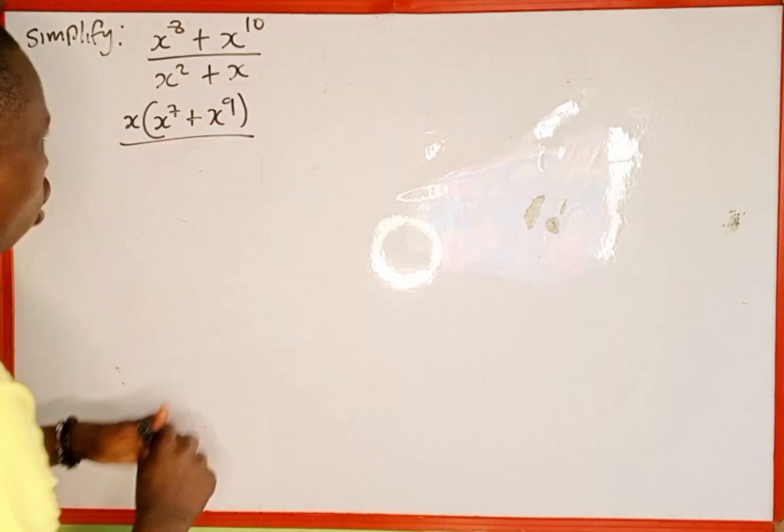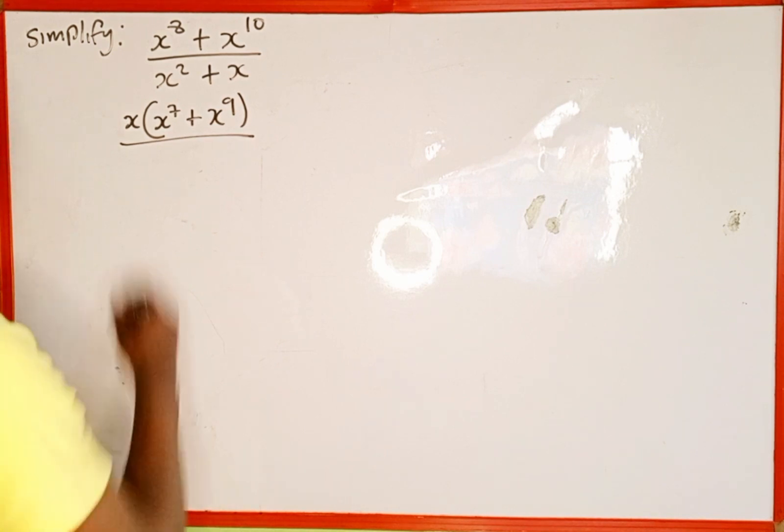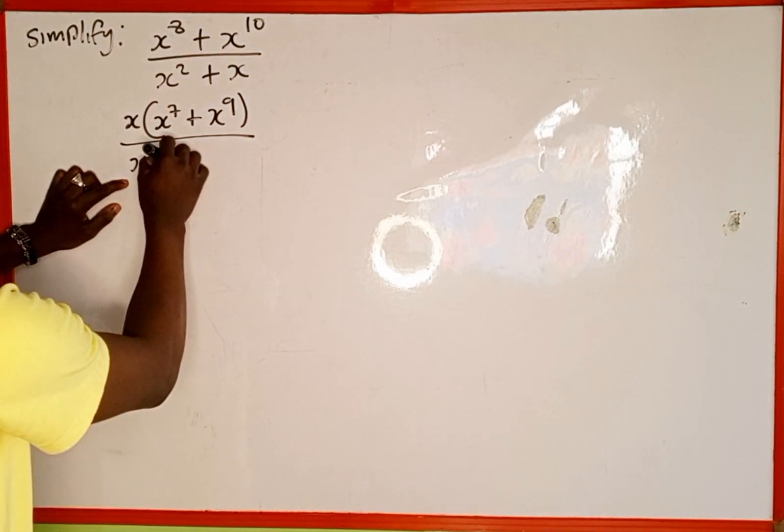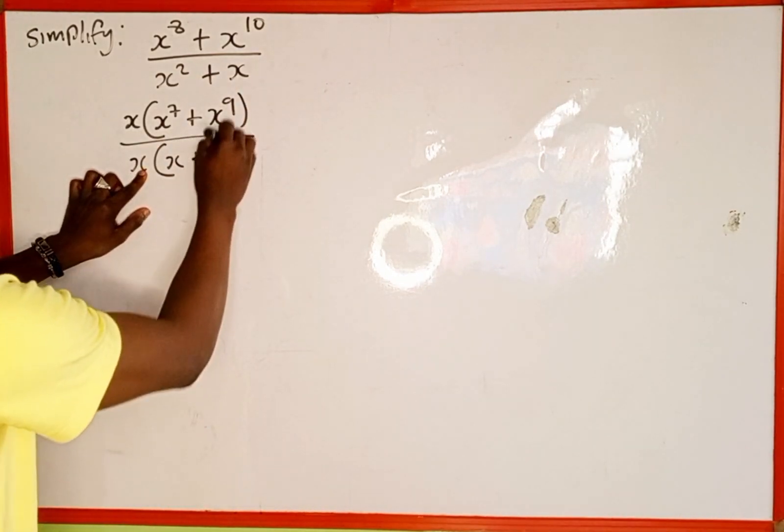Then everything all over. Also, we cannot add this denominator because the powers are not the same. We factor out x also, then x to power 2 divided by x is going to remain only x, then plus x divided by x is going to be 1.